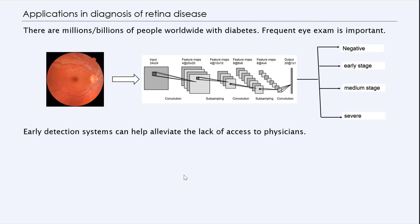So how do we apply this in healthcare? For example, let's suppose that there are millions of people worldwide with diabetes. A frequent eye exam is important. So what if you can build an app that takes a picture of the eye, retina, and then run it through a neural network, and try to identify there's a defect in the eye.